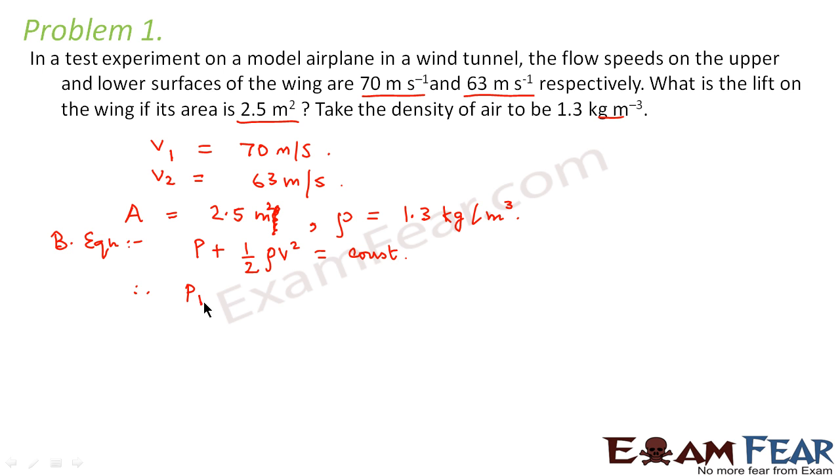So we say p1 plus half rho v1 square is equal to p2 plus half rho v2 square.